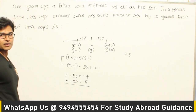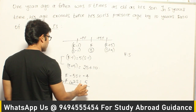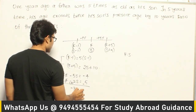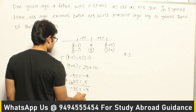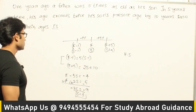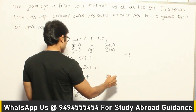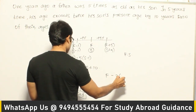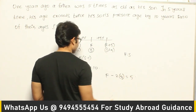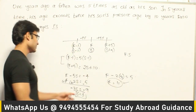Subtracting the first equation from the second: -3S = -9, which means S = 3. So the son's age is 3. To find the father's age, use F - 2(3) = 5, so F = 6 + 5 = 11. Father's age is 11.